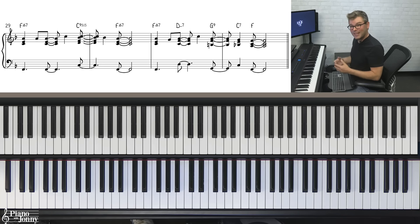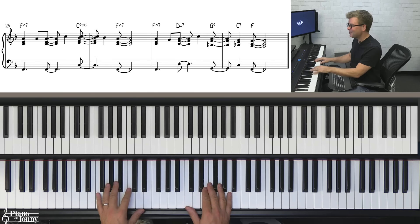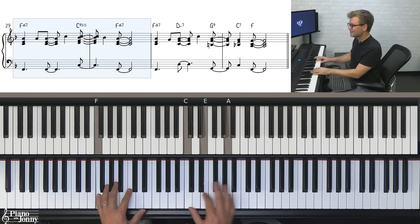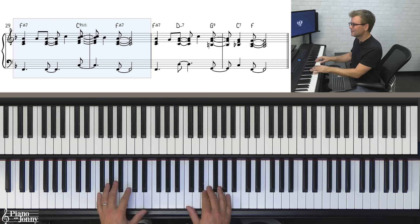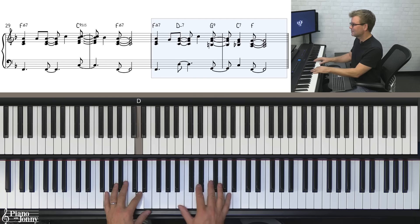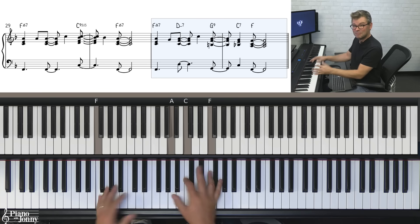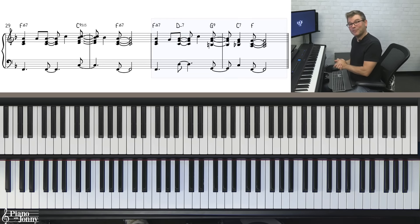And the cool thing is that the next four measures are identical to what we just played. So since these four bars are an exact repetition of what we just played, we simply play it again like this. Nice, right? And now we're ready for the B section.